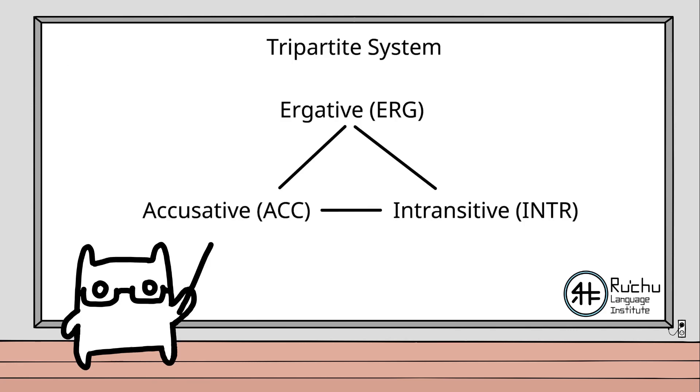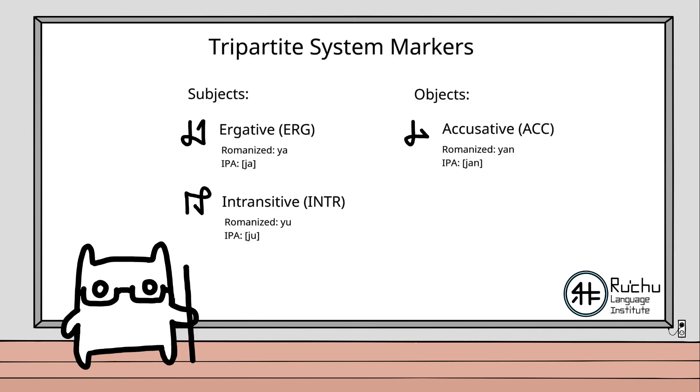Now for syntax. Word order is denoted by a tripartite system. What does this mean? Well, having a tripartite system means that subjects and objects are denoted via ergative, accusative, and or intransitive markers.